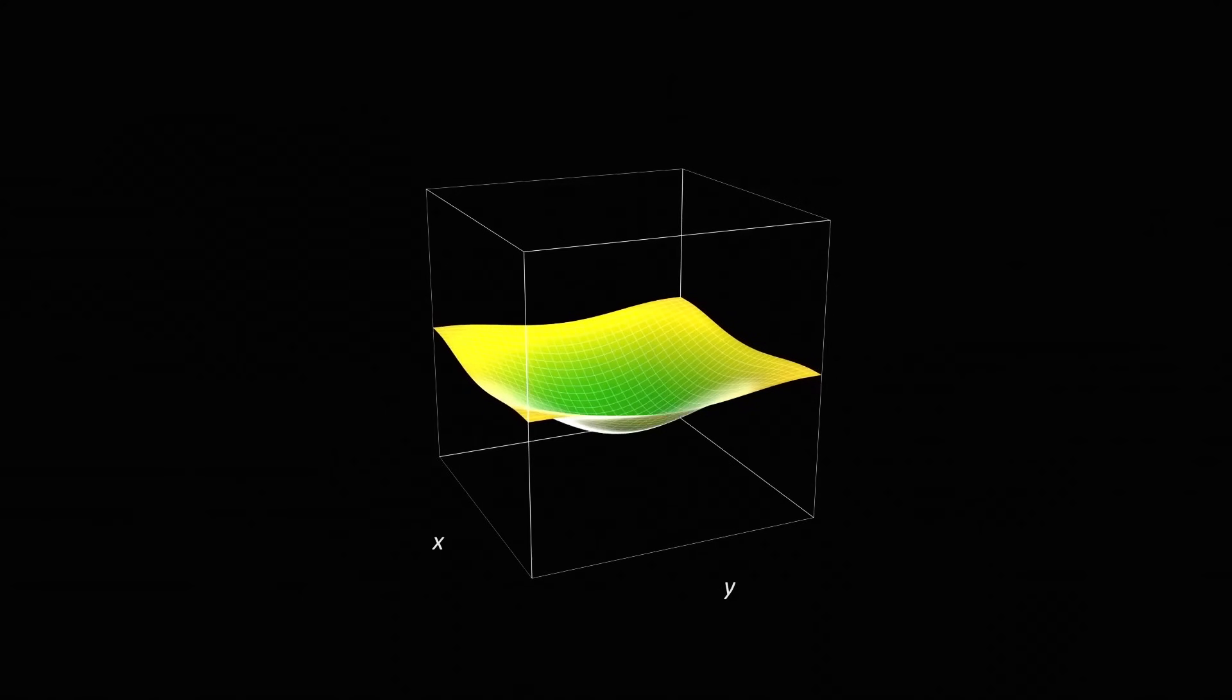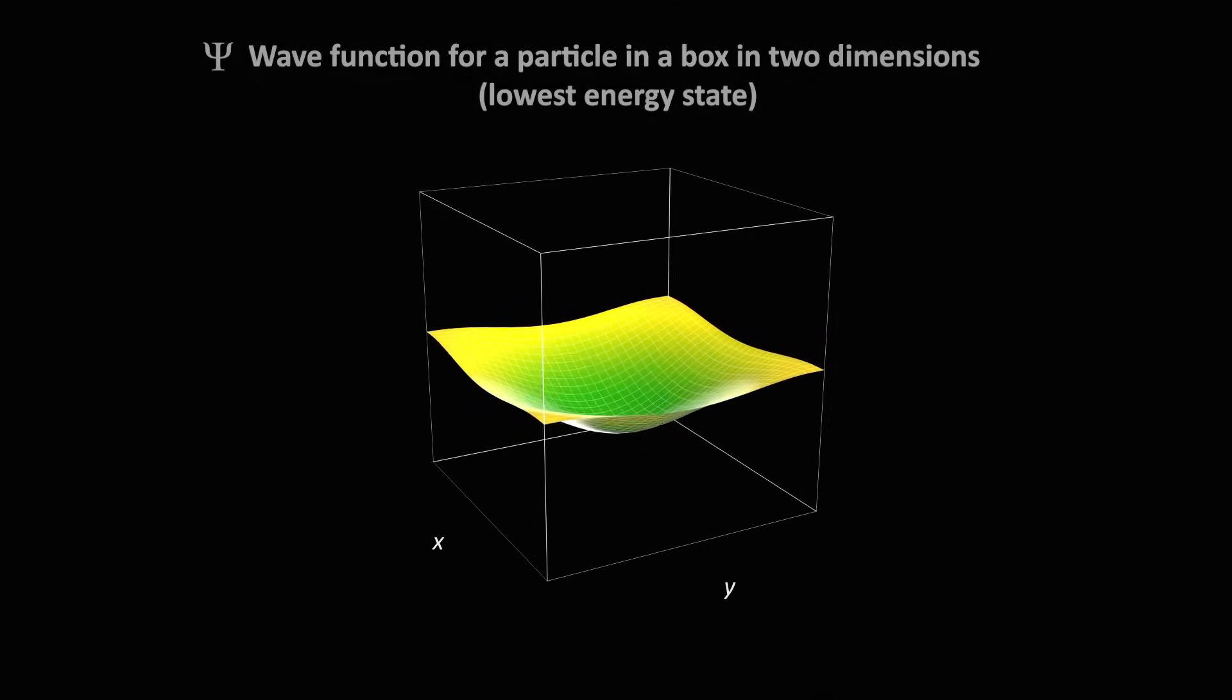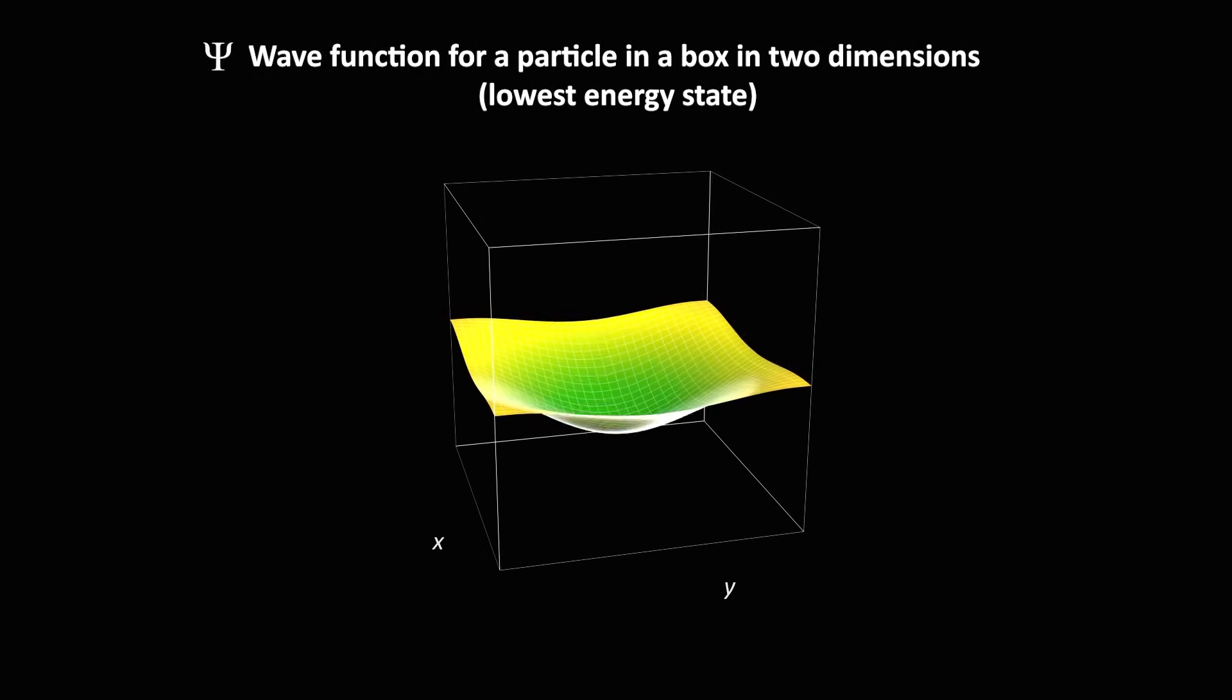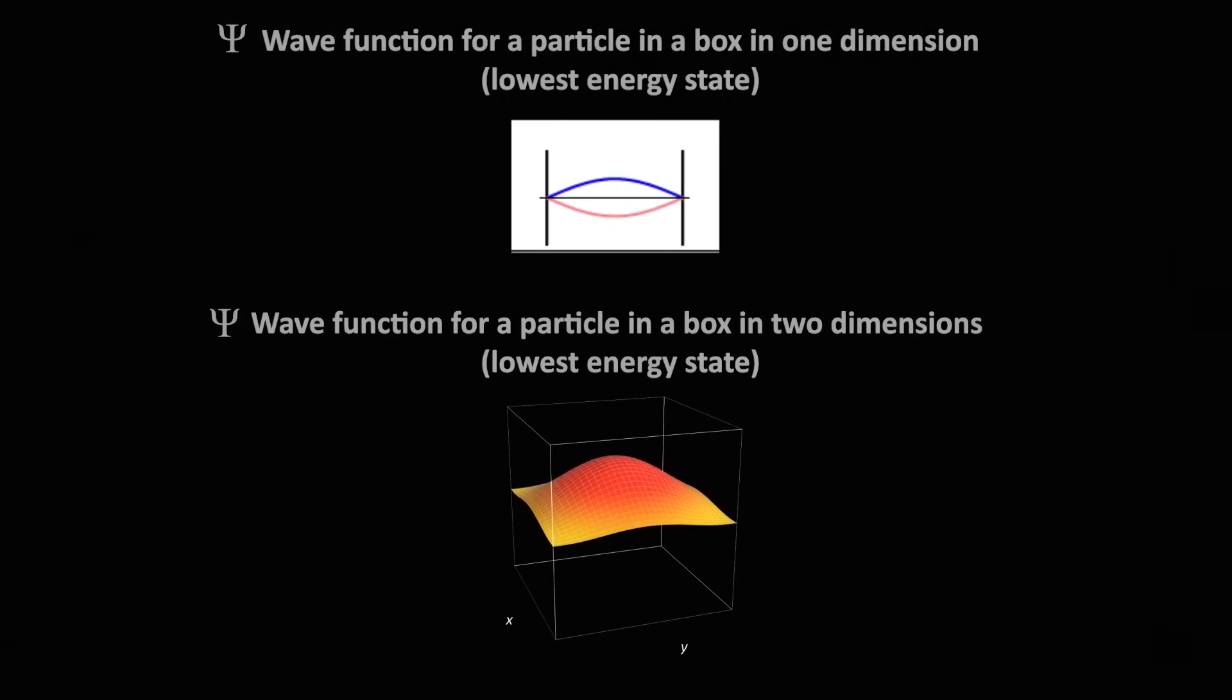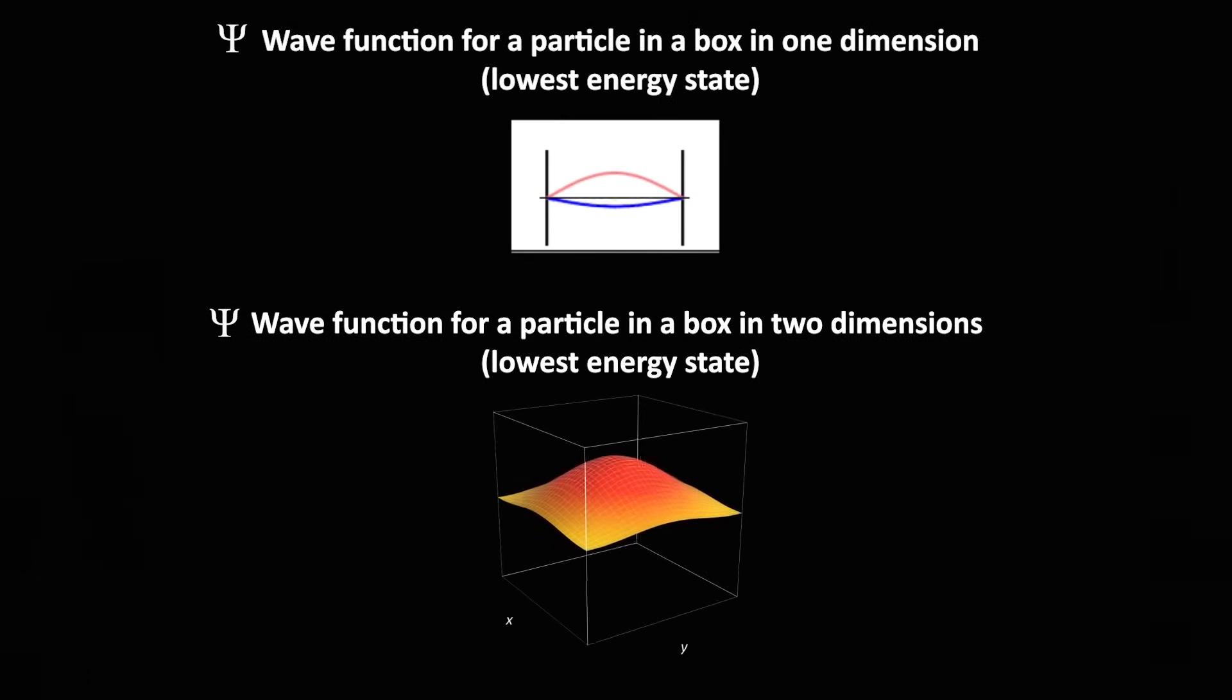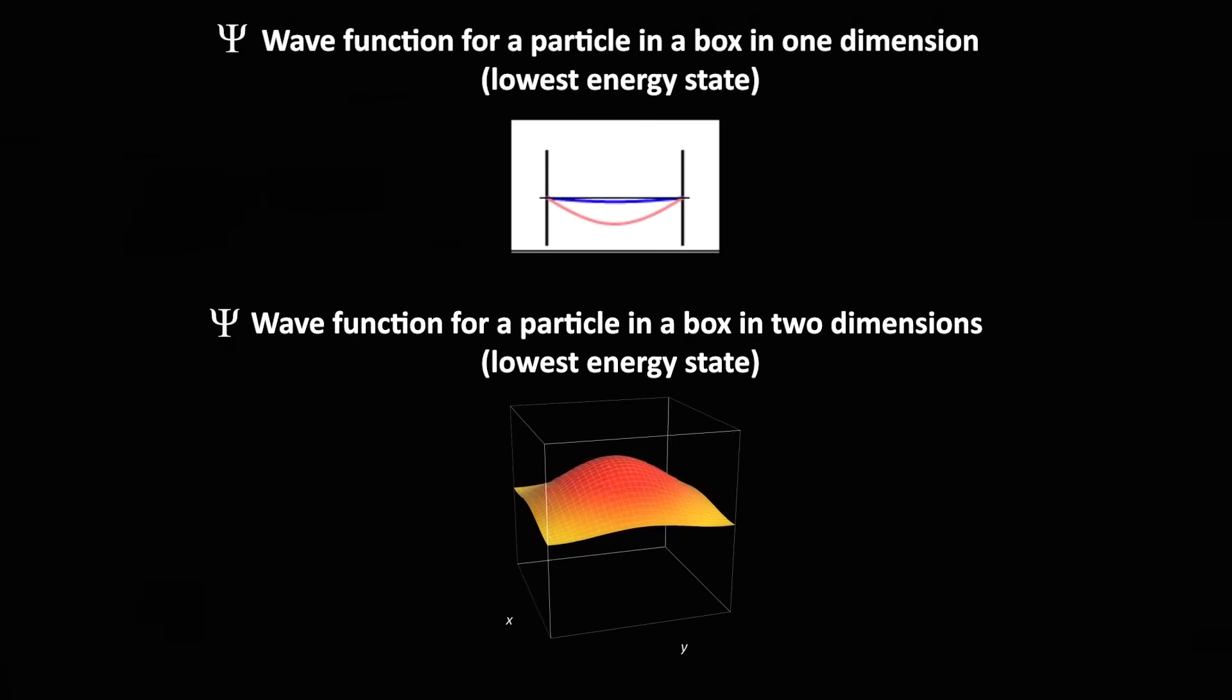For a single quantum particle, for example, in a square box, the wave function of the lowest energy state has a single peak in the middle. If you know the wave function, Schrödinger's equation lets you figure out, for example, where you will find the particle in space, or how fast it is traveling, or how much energy it has.